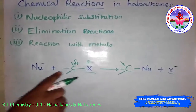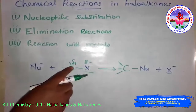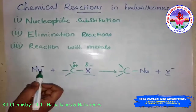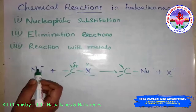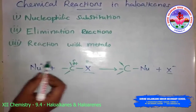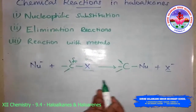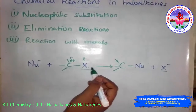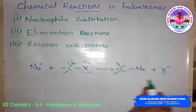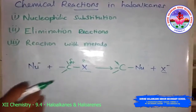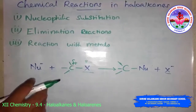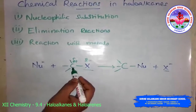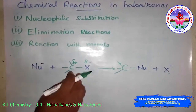In the carbon-halogen bond, the carbon has a partial positive charge and the halogen has a partial negative charge. The nucleophile, having a negative charge, attracts the carbon, with the halide ion leaving. The halide ion is a leaving group and departs as a halide ion. This is a useful class of organic reactions of alkyl halides in which the halogen is bonded to an sp3 hybridized carbon atom.